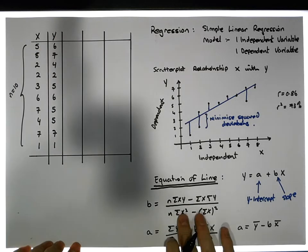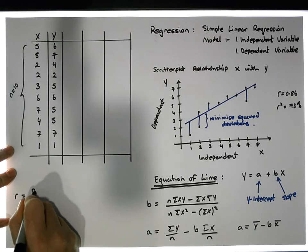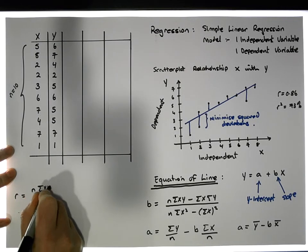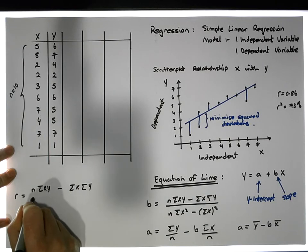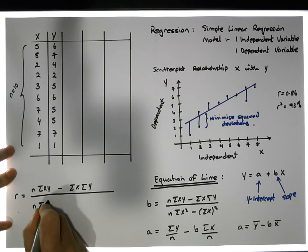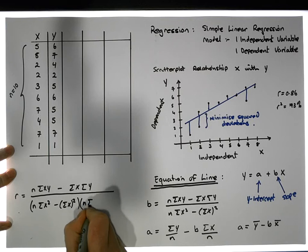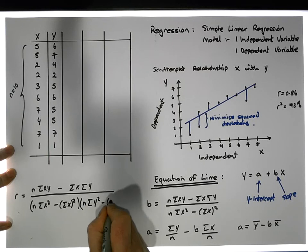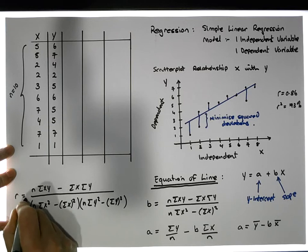When we do our correlation analysis, the formula for r is equal to n times sigma(xy) minus sigma(x) times sigma(y), all divided by the square root of the factor: n times sigma(x²) minus sigma(x) all squared, times n times sigma(y²) minus sigma(y) all squared.